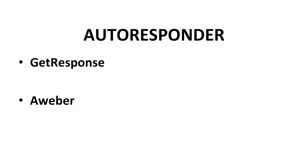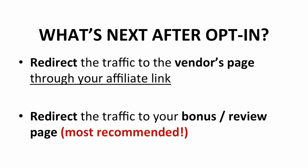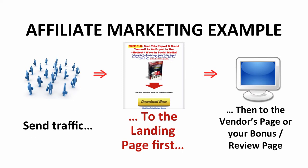With the expanding of your email list, you definitely need an autoresponder to manage your subscribers. I recommend that you subscribe to GetResponse or Aweber. Both are paid online software that helps you manage your subscribers almost on autopilot — $15 per month for GetResponse and $19 per month for Aweber. After the opt-in, you redirect the traffic to the vendor's page through your affiliate link, or to your bonus or review page first before the vendor's page. This is the most recommended approach, as it helps you build credibility and keep subscribers with you.